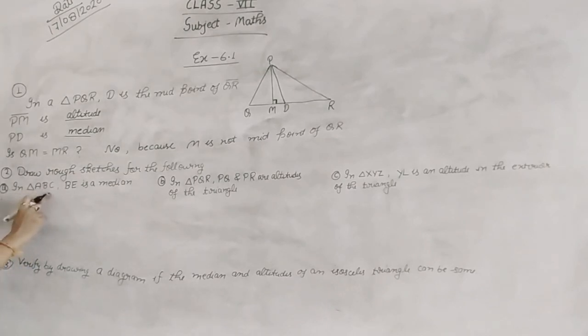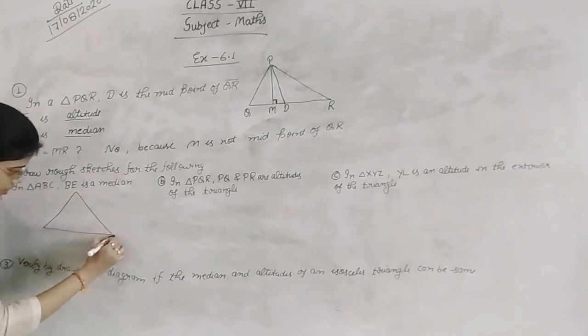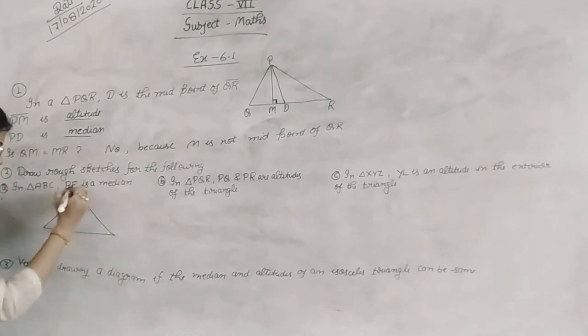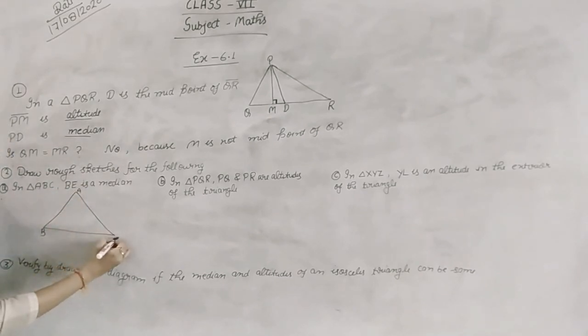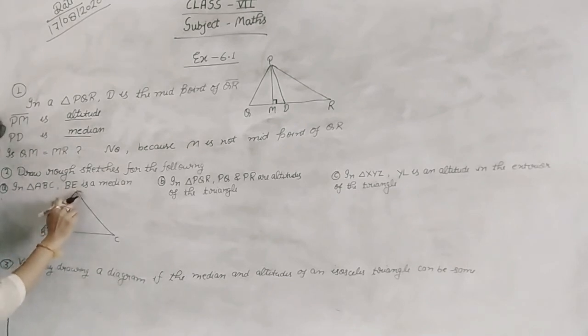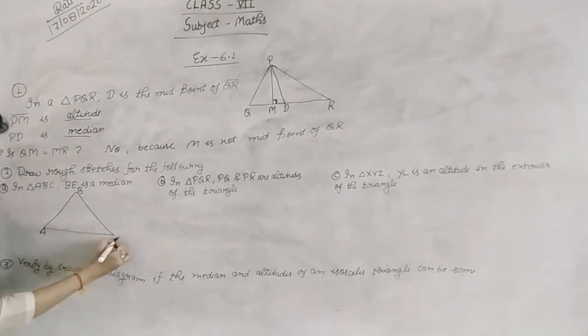First question, this is a triangle ABC, the E is a median. This is a triangle ABC. B, E is a median. If BE is a median, if you have a website, ABC.